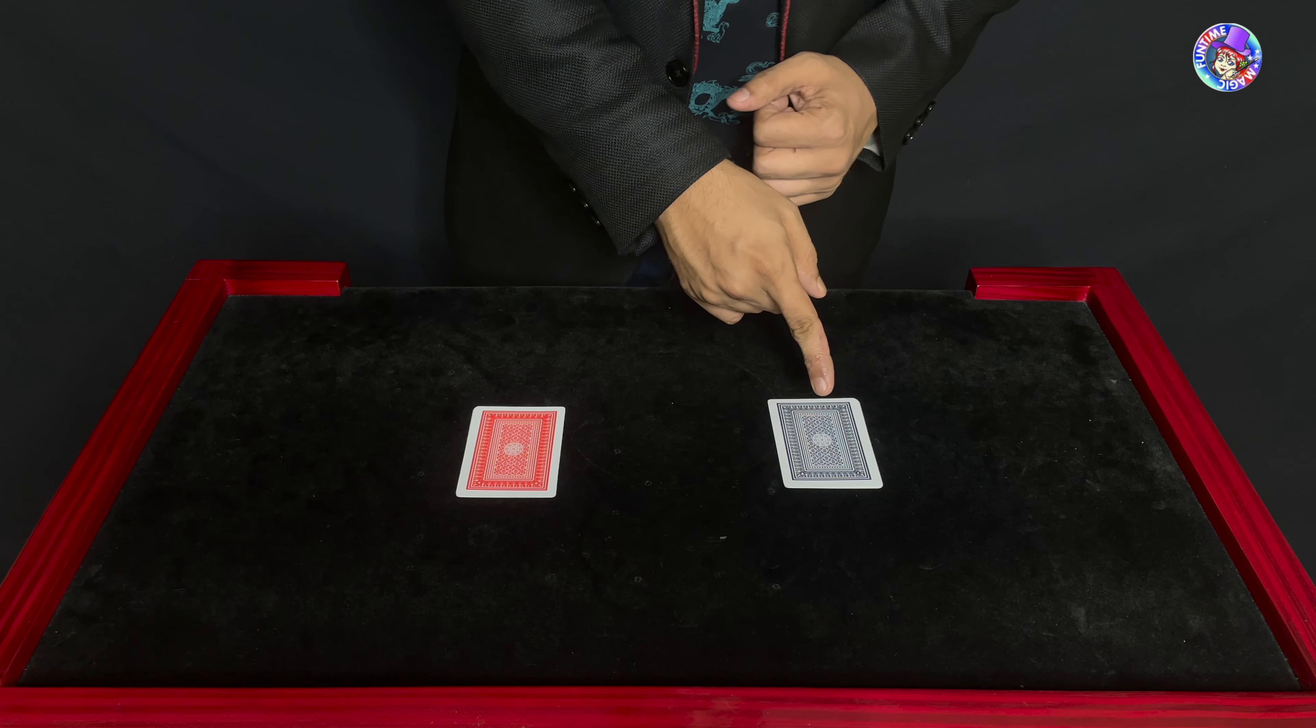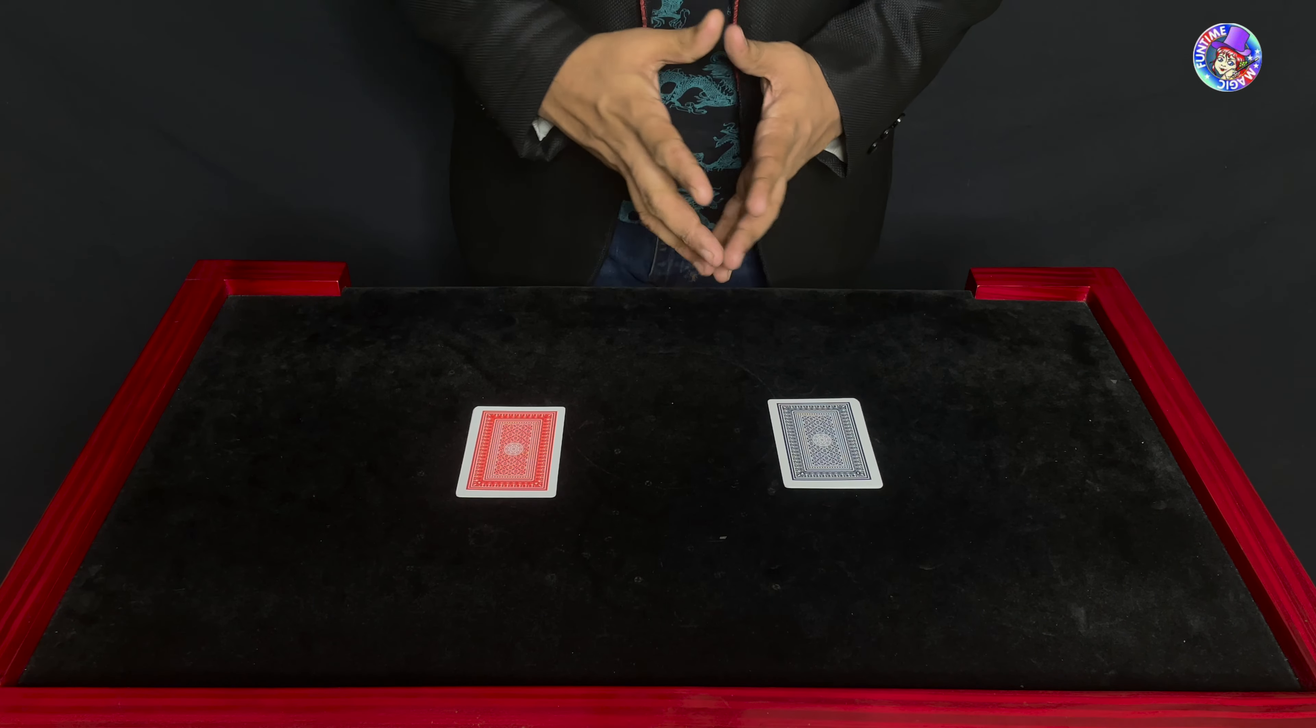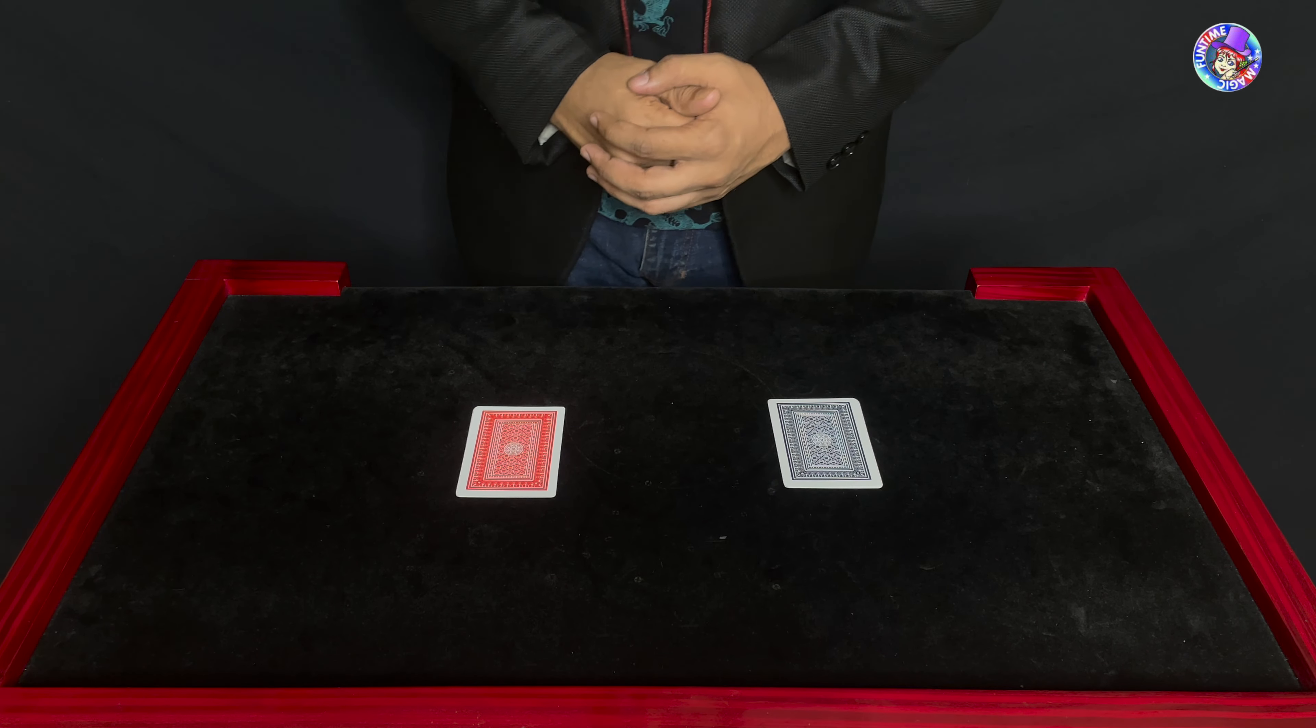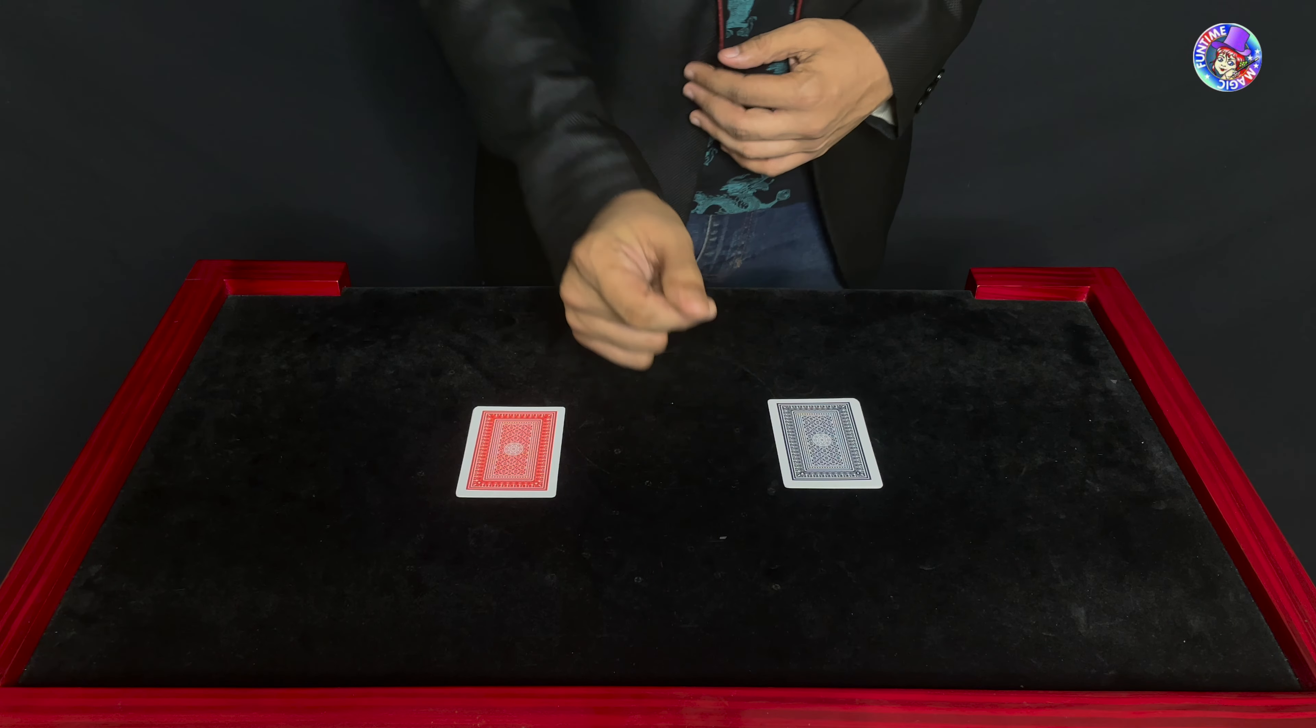From the blue back pile, so go ahead and name any of the black fours. The four of clubs. And how about a red four from the red pile? The four of diamonds. Alright, I snap my fingers.